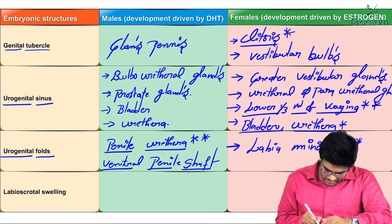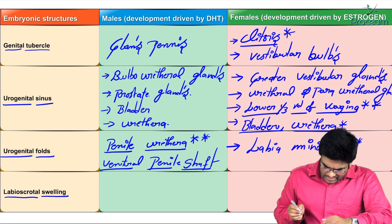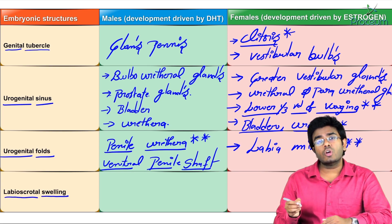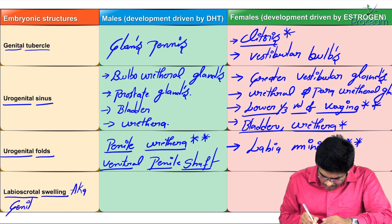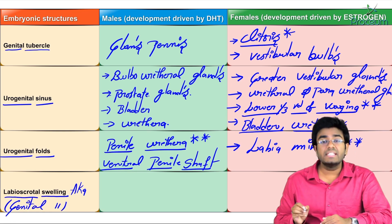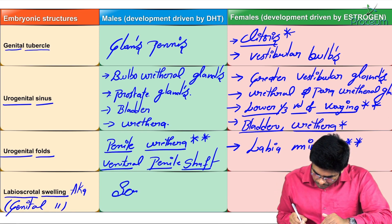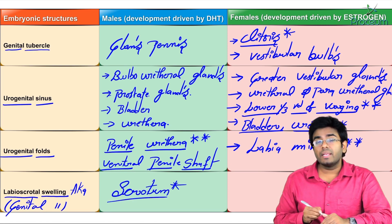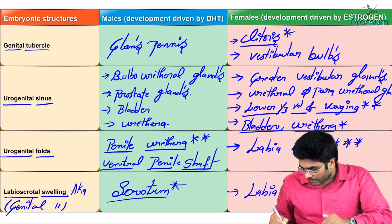The labioscrotal swellings — also called genital swellings — in males they develop into scrotum. In females, the same labioscrotal swellings will develop into labia majora.